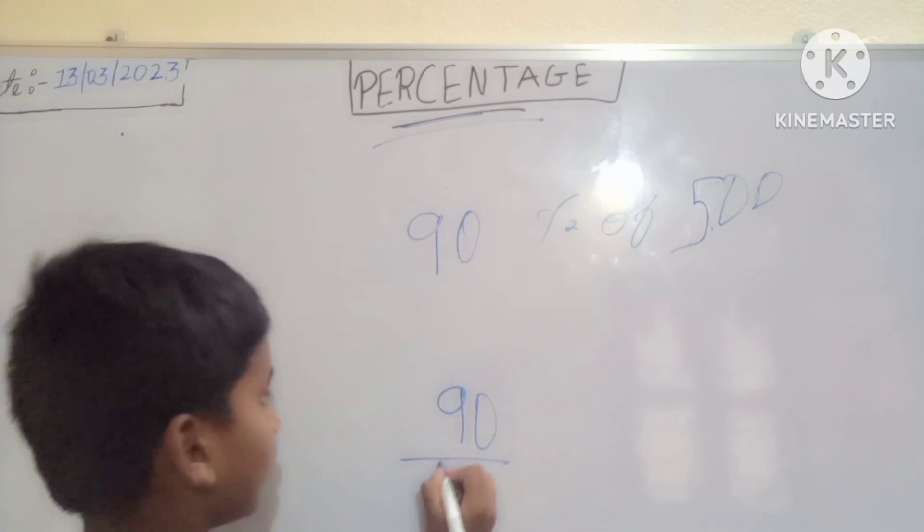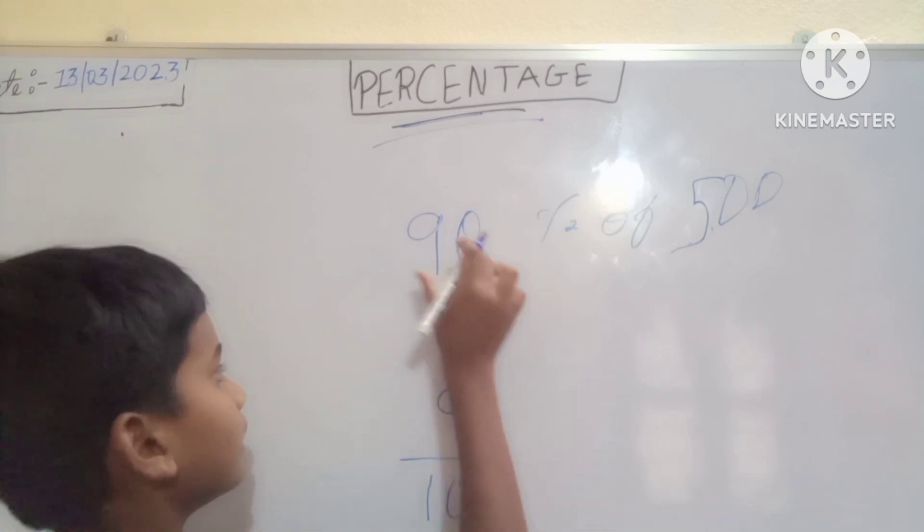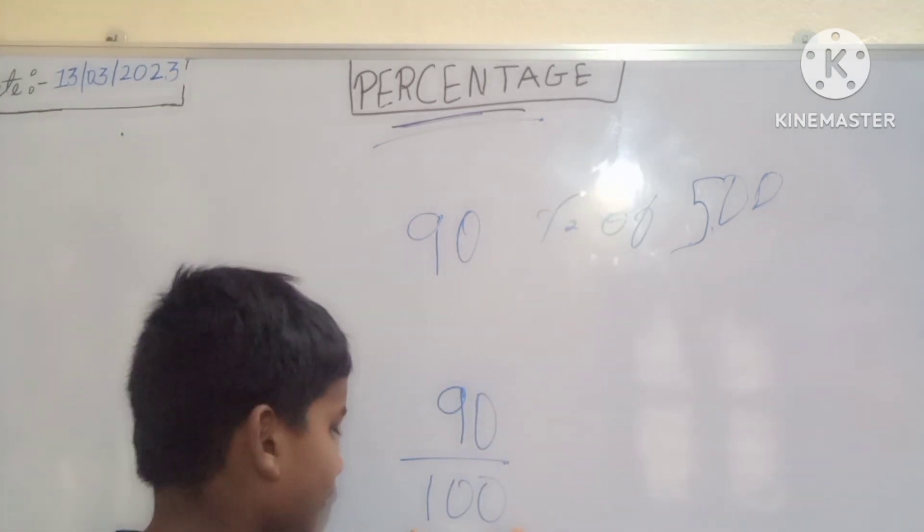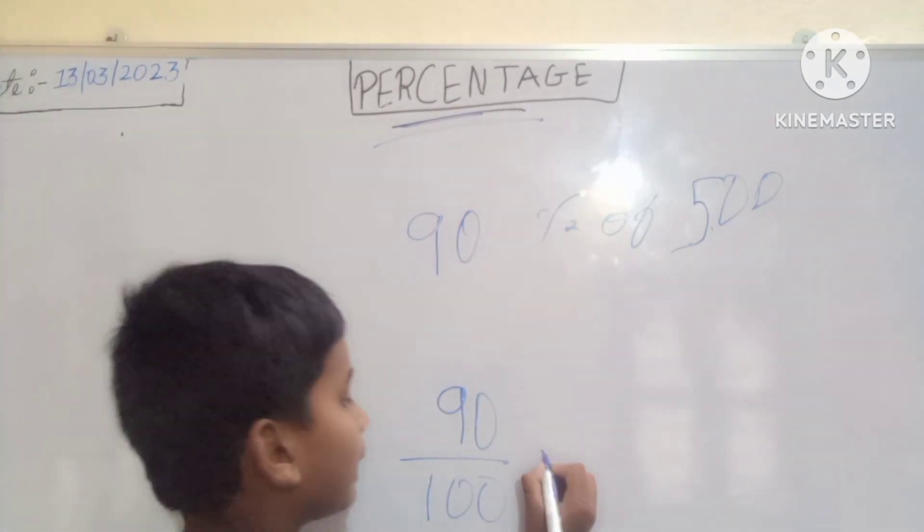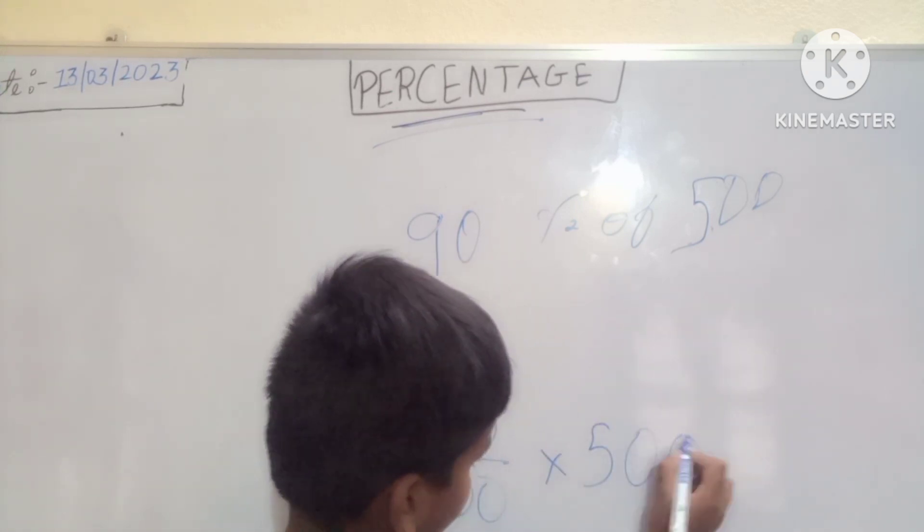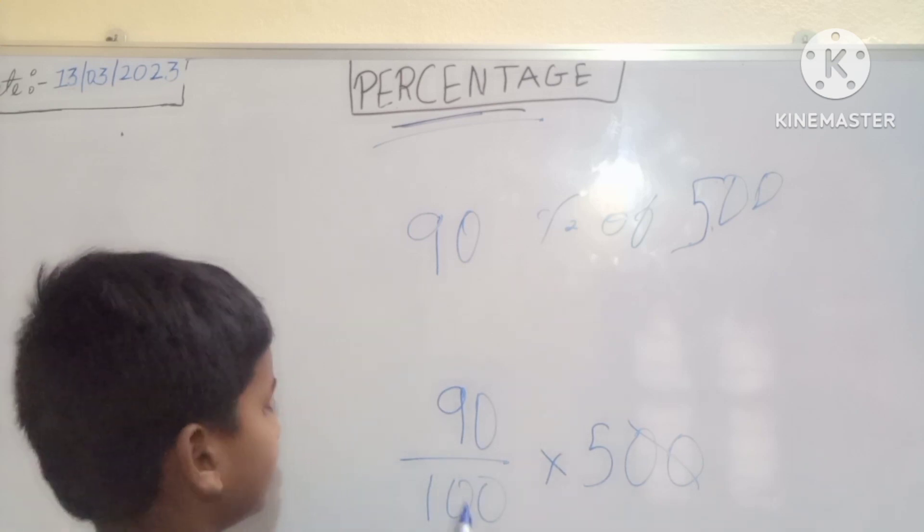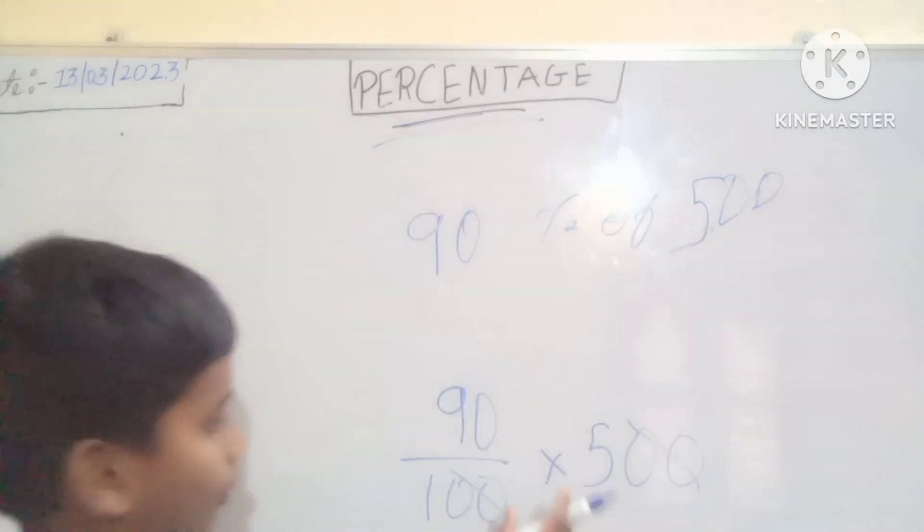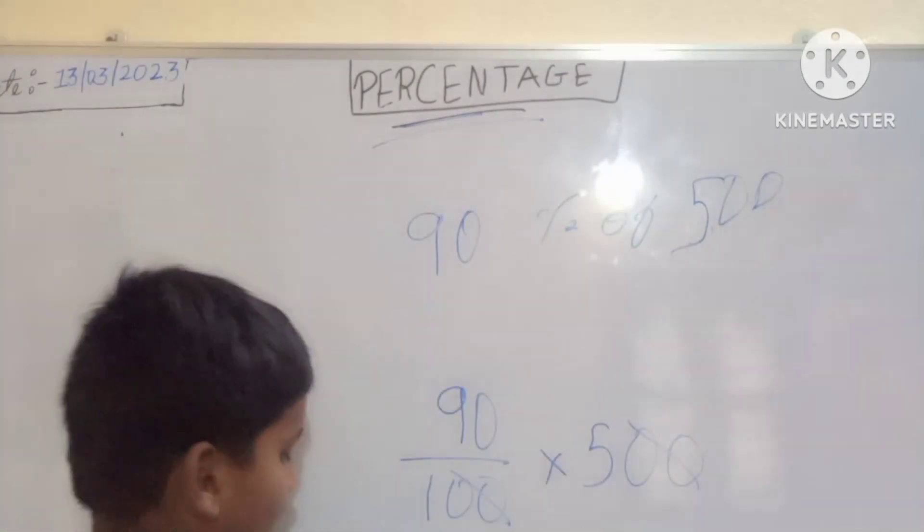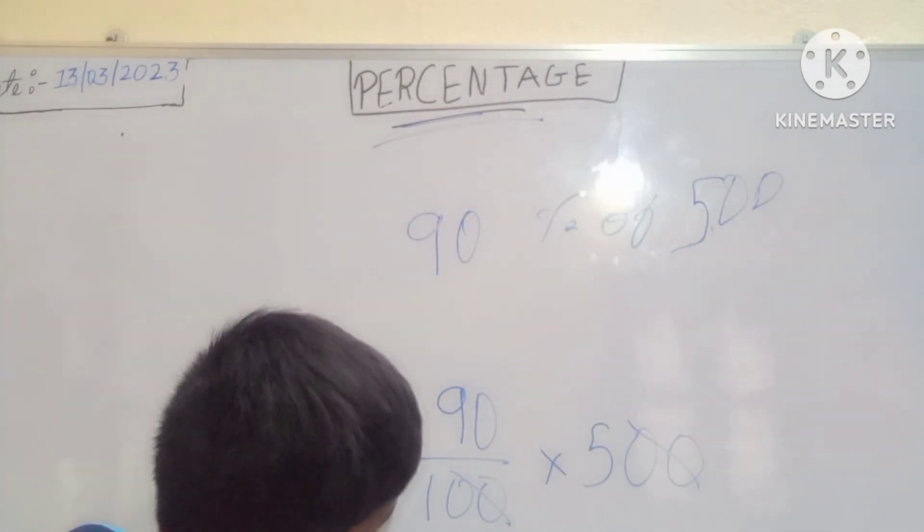Means 90, keep the number as it is here, and percentage means 100. 'Of' means multiplication sign. 500 by 100 as it is here. Now see, 5 times 9, that is 45, means 450. You got 450 out of 500.